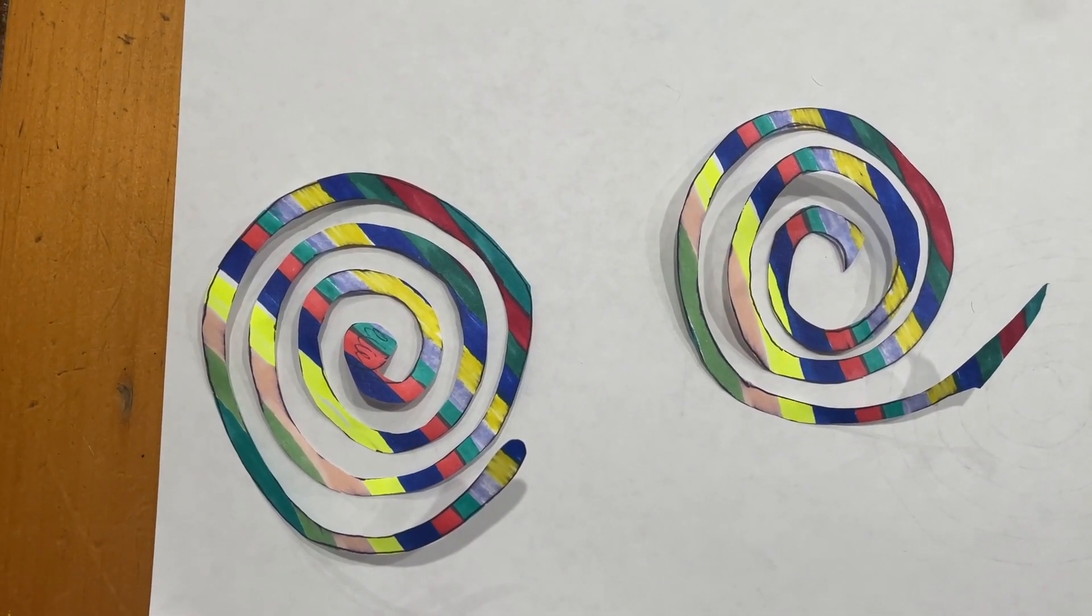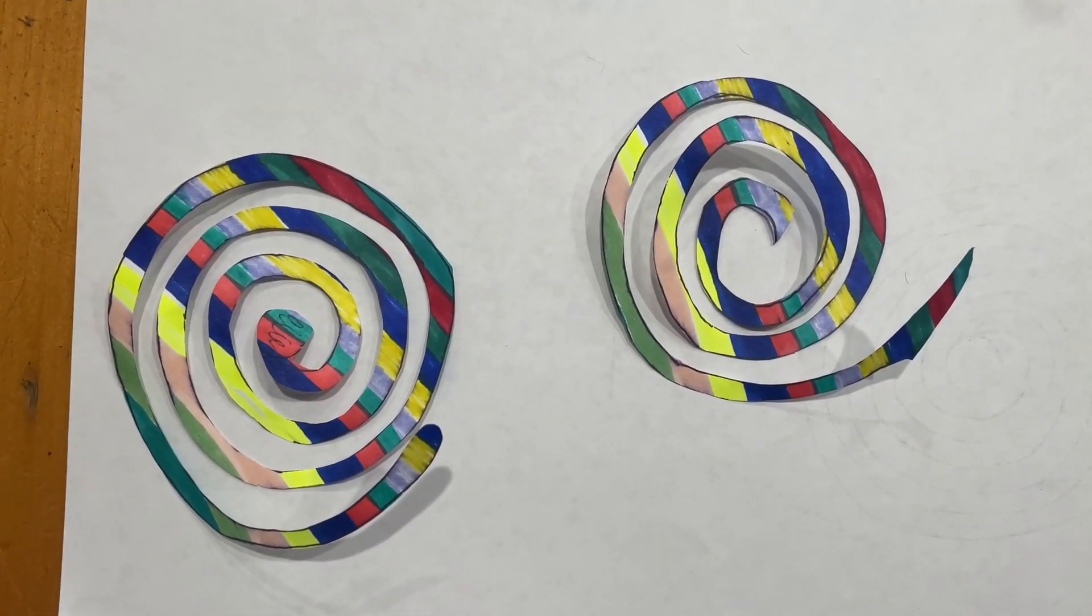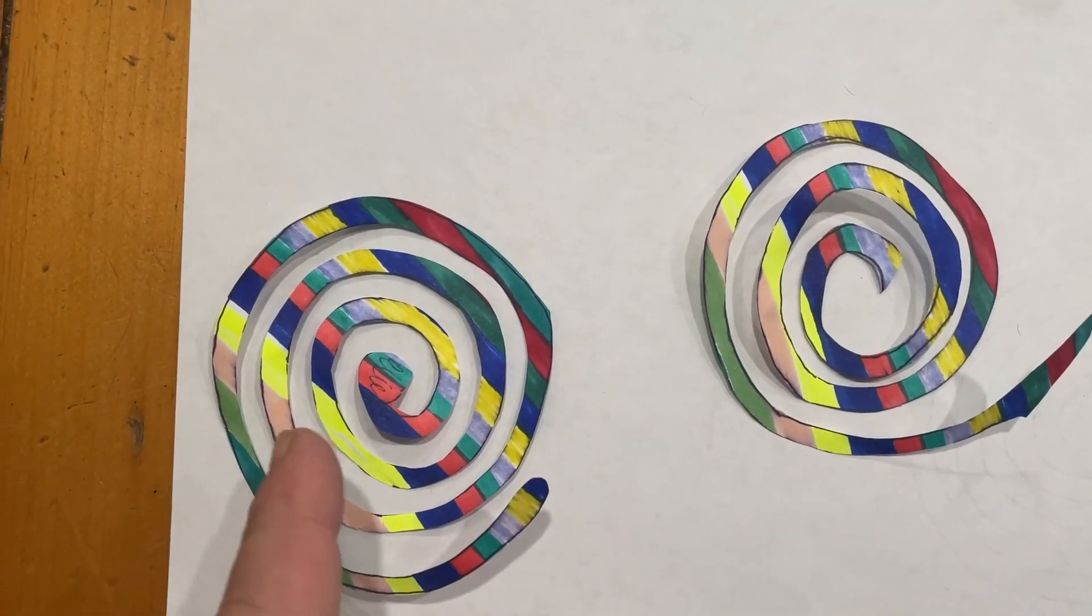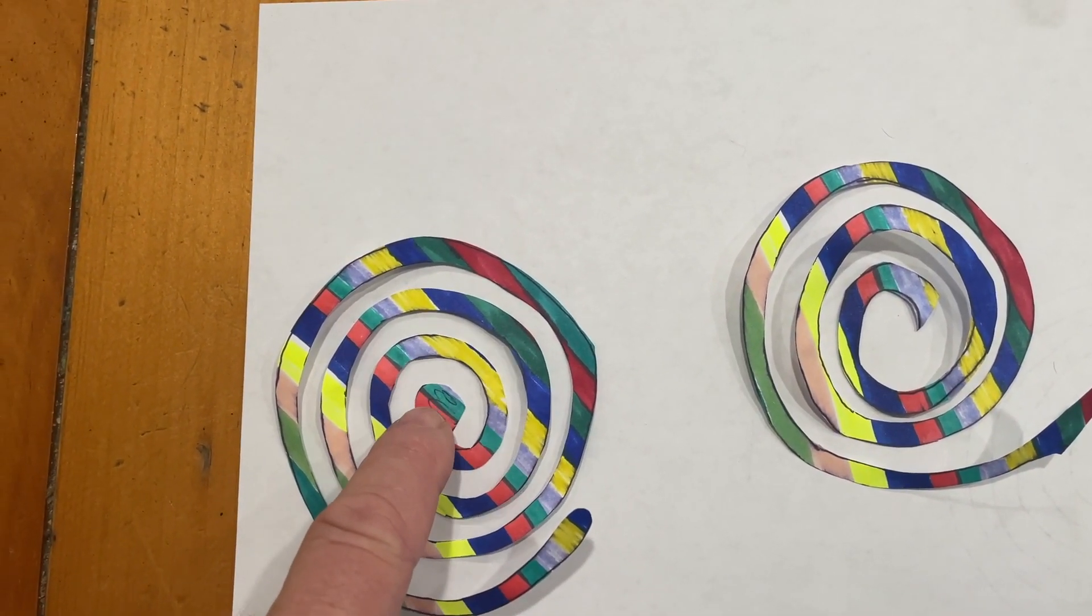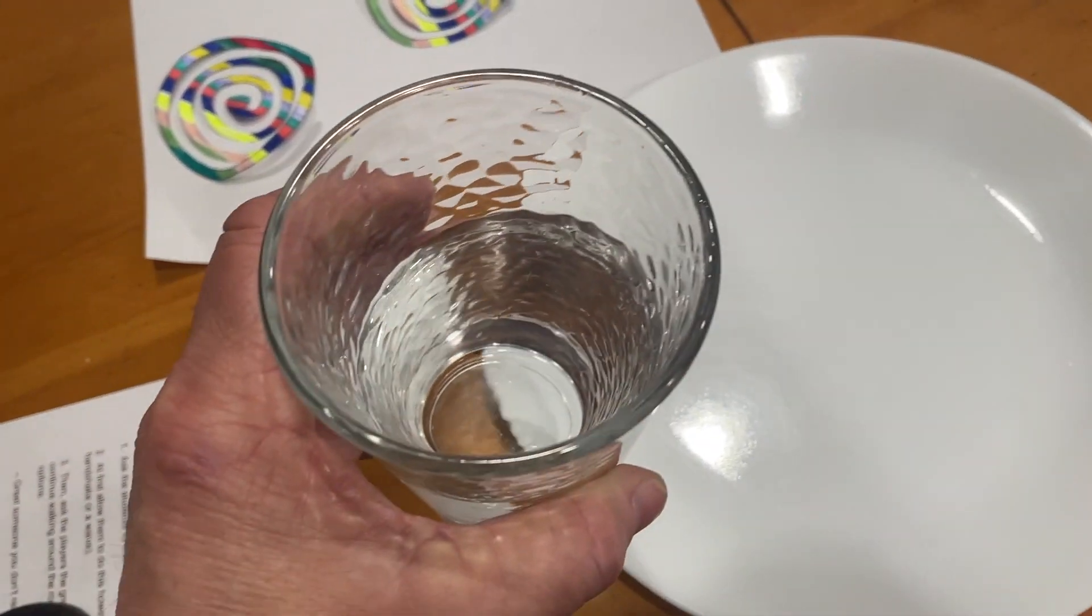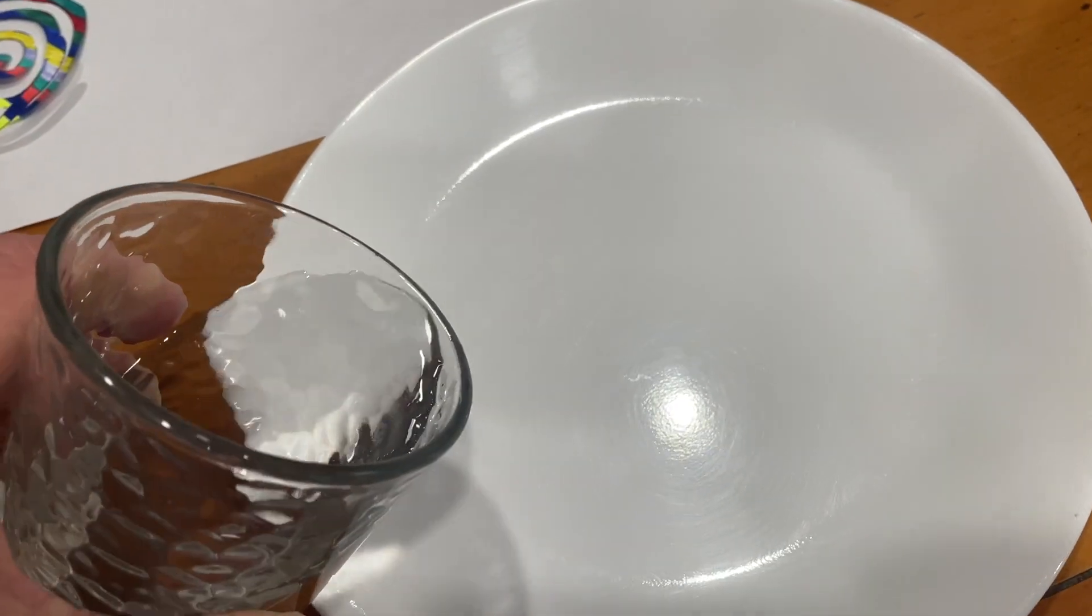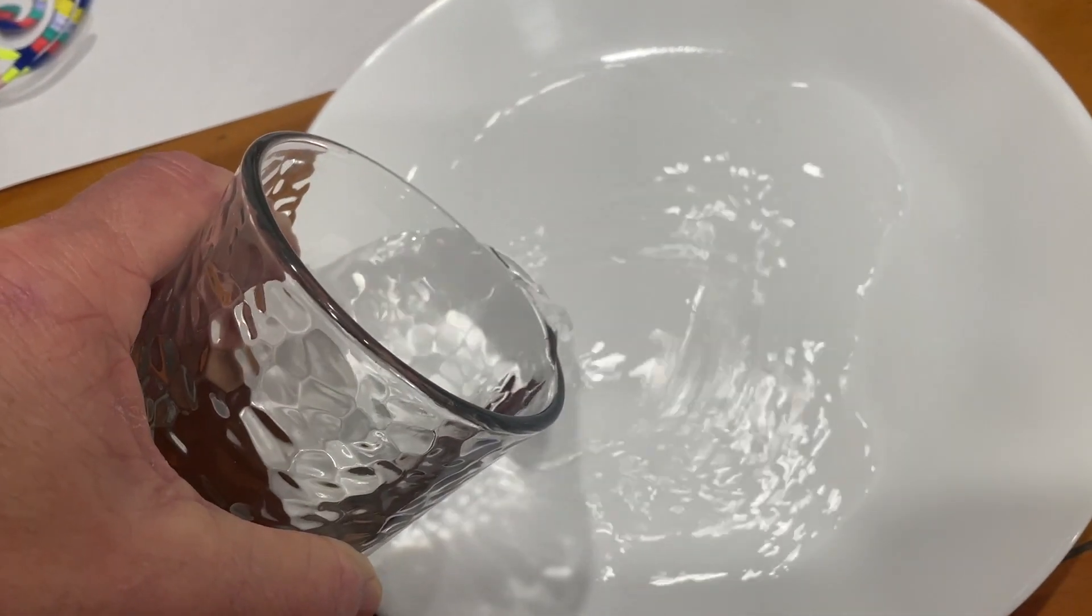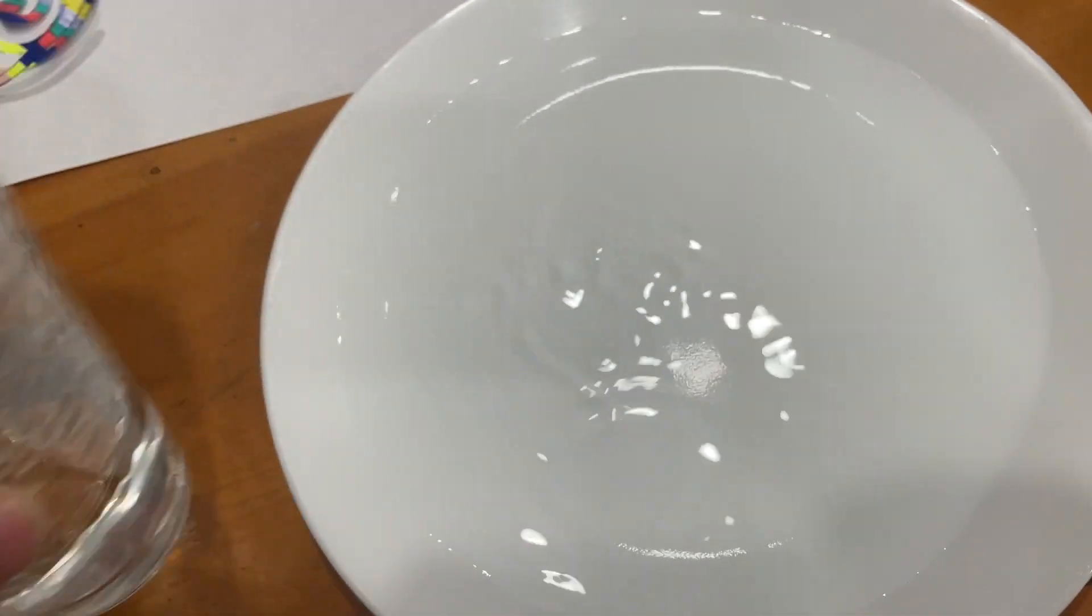You're going to want to use the one on the left that has the little dot in the middle. That's going to work better. The other one will work, but it's a little bit harder. So pick the one on the left. You're going to turn it upside down. First, you can put water in a dish or a bowl like I'm doing here. It doesn't have to be all the way up, just enough to cover it.